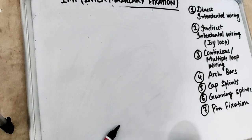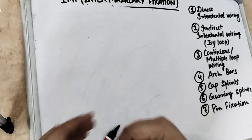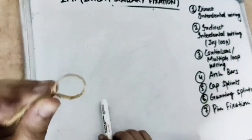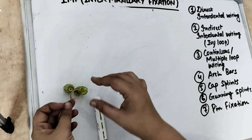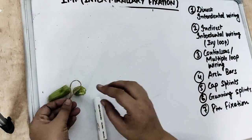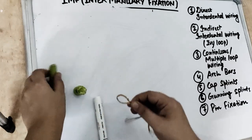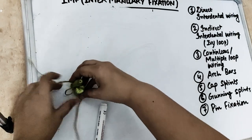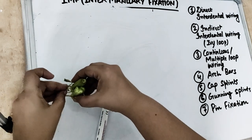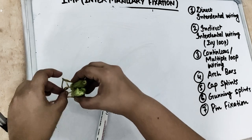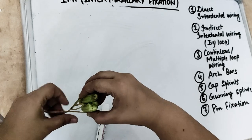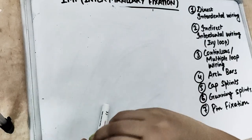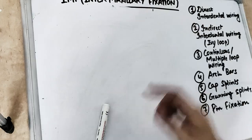Now coming to the indirect interdental wiring — the IV loop. How do we make this IV loop? First we make the eyelet. In between two teeth we pass this eyelet and this is the buckle. Both ends are passed through the interdental spaces, the distal end is passed through the eyelet beneath the mesial shaft, and then it is twisted. This is the indirect interdental wiring.